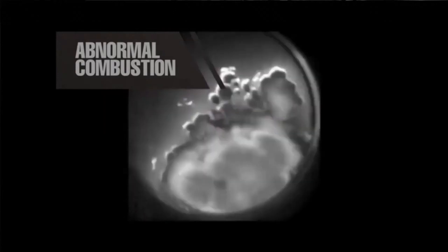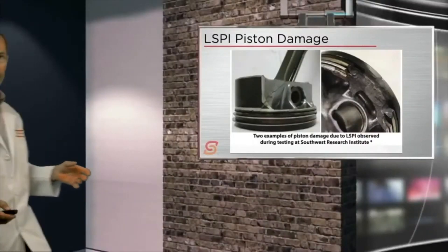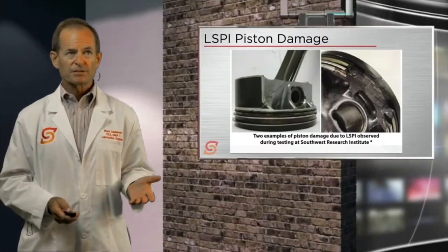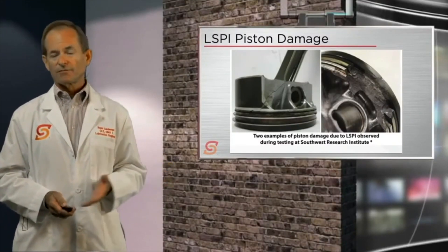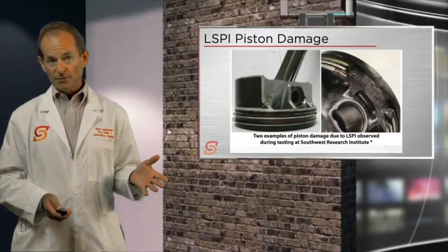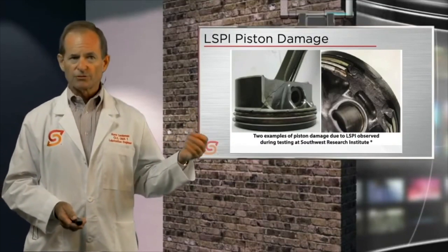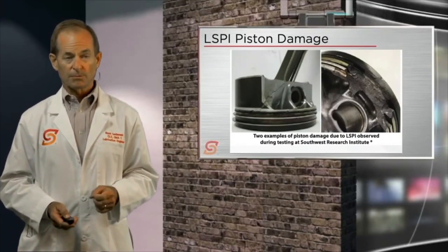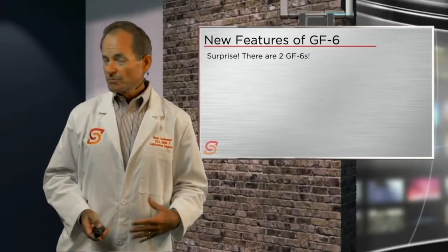Lots of bad things happen with abnormal combustion. It can also cause a hot spot at the location where this is happening, weakening or melting through the metal there. You can end up with some pretty serious damage from low-speed pre-ignition — as shown in these pictures of pistons that were pretty beat up.